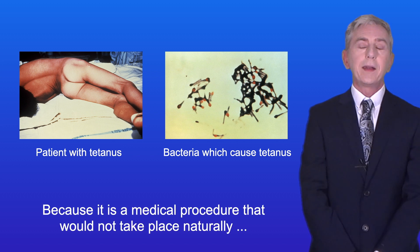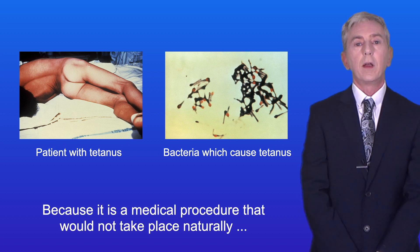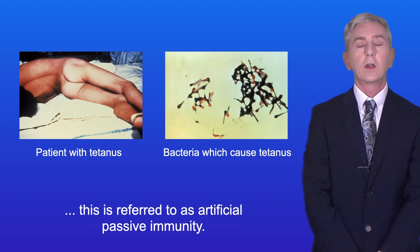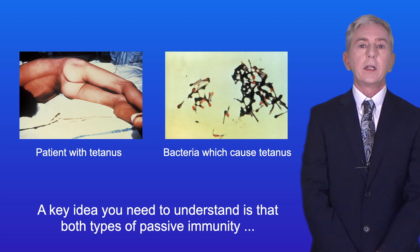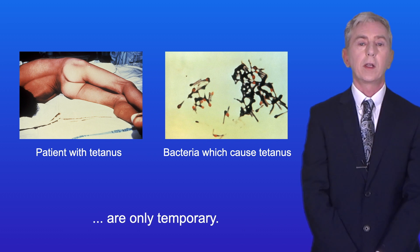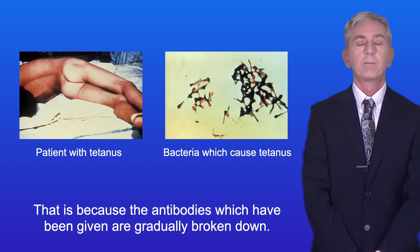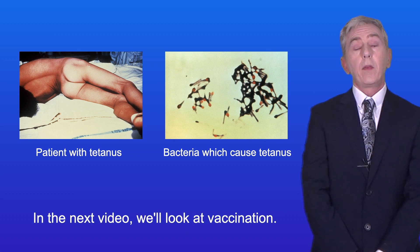And because it's a medical procedure that would not take place naturally, this is referred to as artificial passive immunity. A key idea you need to understand is that both types of passive immunity are only temporary, because the antibodies which have been given are gradually broken down. In the next video we look at vaccination.